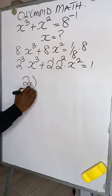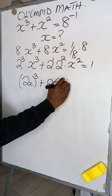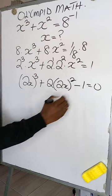This will give us 2x according to the law of indices to the power of 3 plus 2 multiplied by 2x to the power of 2, and this will be minus 1 equal to 0.